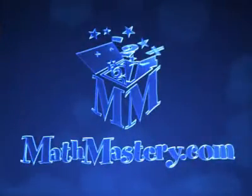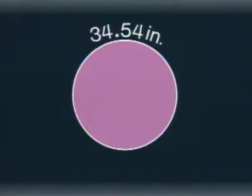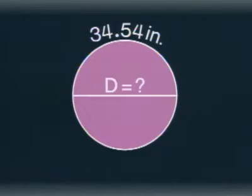Here's a circle with a circumference of 34.54 inches, but you don't know what the diameter is. Here's how you work the problem.